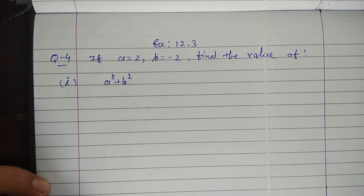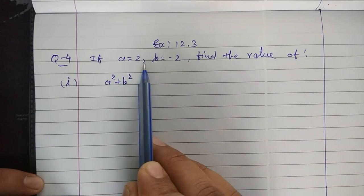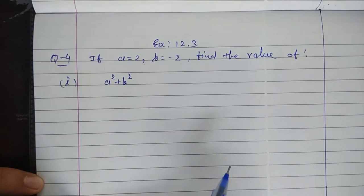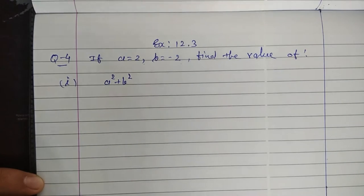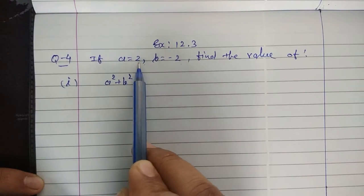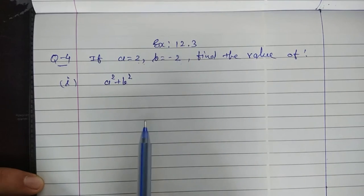Hello students! We are solving exercise 12.3 and we come to question 4. If A is equal to 2, B is equal to minus 2, find the value of the expression. In this question, expressions are given in two variables A and B and their values are also given, that is A is equal to 2 and B is equal to minus 2. We have to put these values in the expression and find the value of the expression.